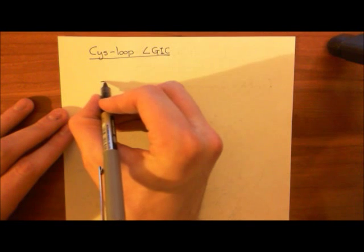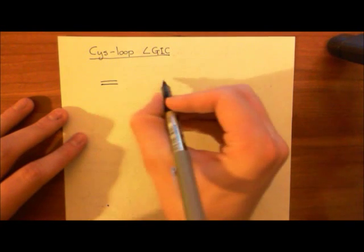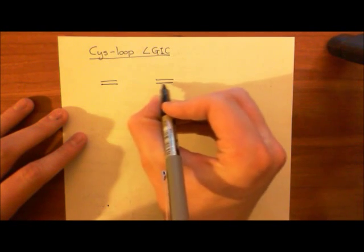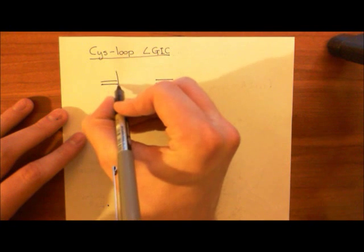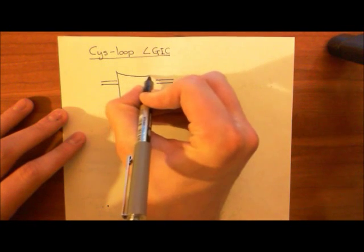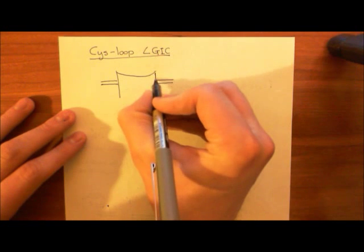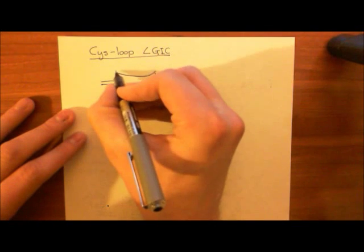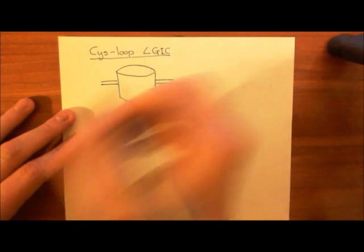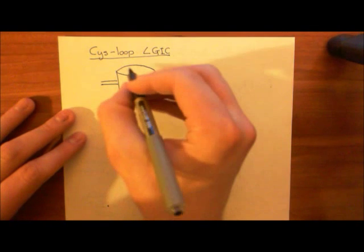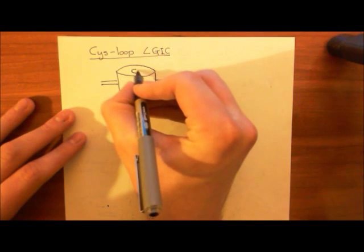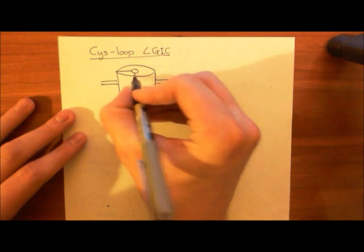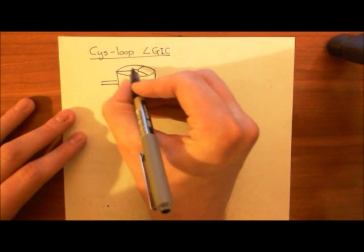If we draw the structure of the GABA-A receptor in the phospholipid bilayer — here is the phospholipid bilayer of the membrane, and here is our GABA-A receptor. It's an ion channel, so when it's in the open state it's going to allow chloride anions to move through. So it's specifically an anionic channel.